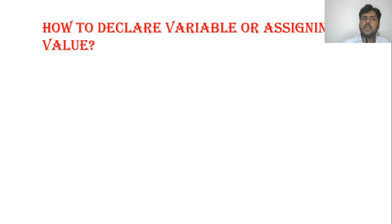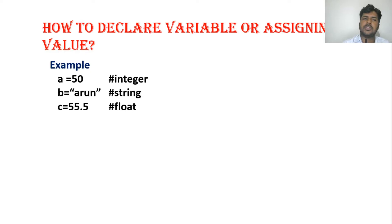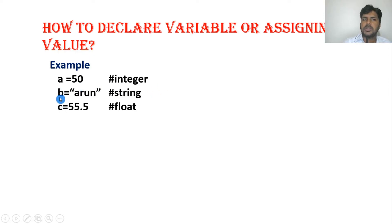How do we declare a variable and assign a value? In C, C++, and Java, we declare the variable separately and assign the value separately. But in Python, we can directly assign a value. For example, if I say a = 50, automatically it will become an integer. Similarly, if I assign a decimal it becomes a float.